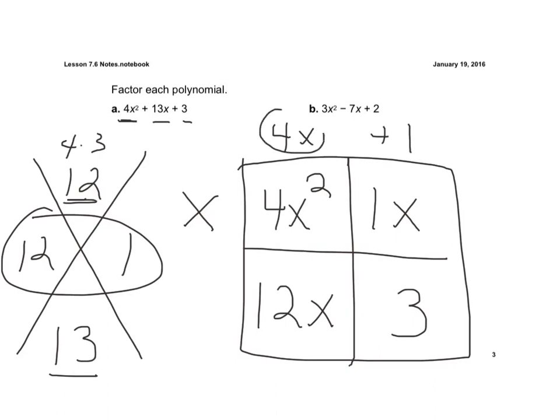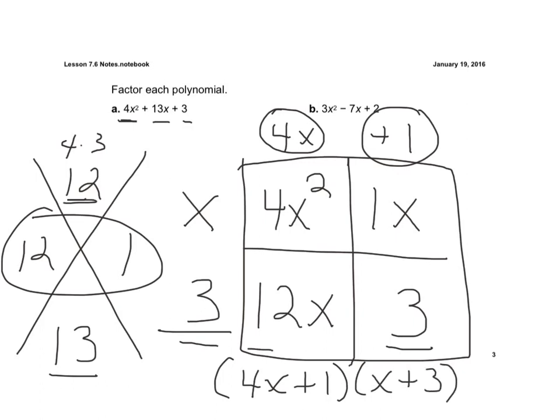Now, what times 4x will give me 12x? Well, that would be 3. And again, if I check that, now 3 times 1 is 3. And so I filled in my box. Across the top, I have 4x plus 1 times, down the side, x plus 3. And now I've factored that quadratic trinomial completely.